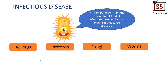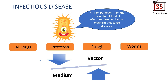Pathogens are organisms that cause disease. Examples of pathogens are viruses, protozoa, fungi, and worms. As mentioned earlier, pathogens can transmit through two ways: namely through mediums and through vectors.